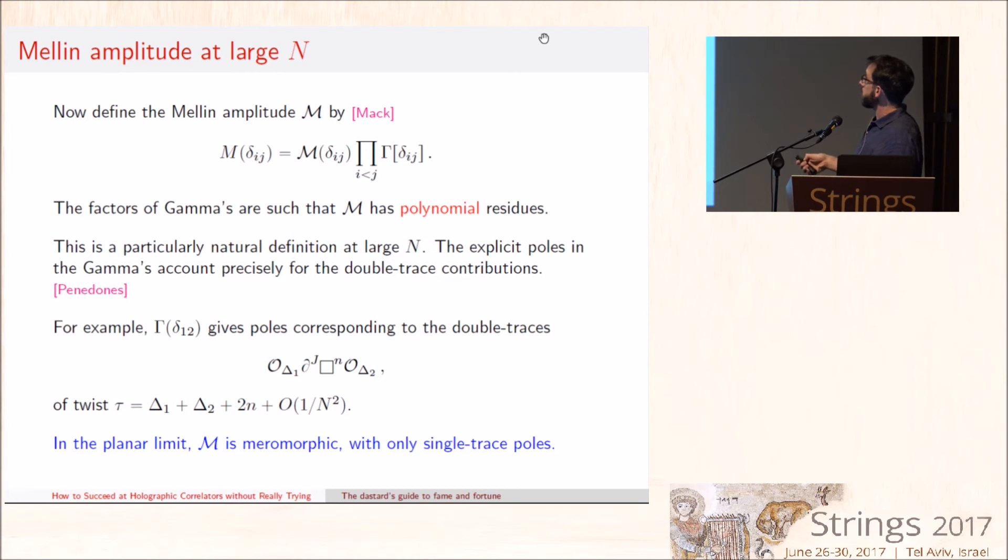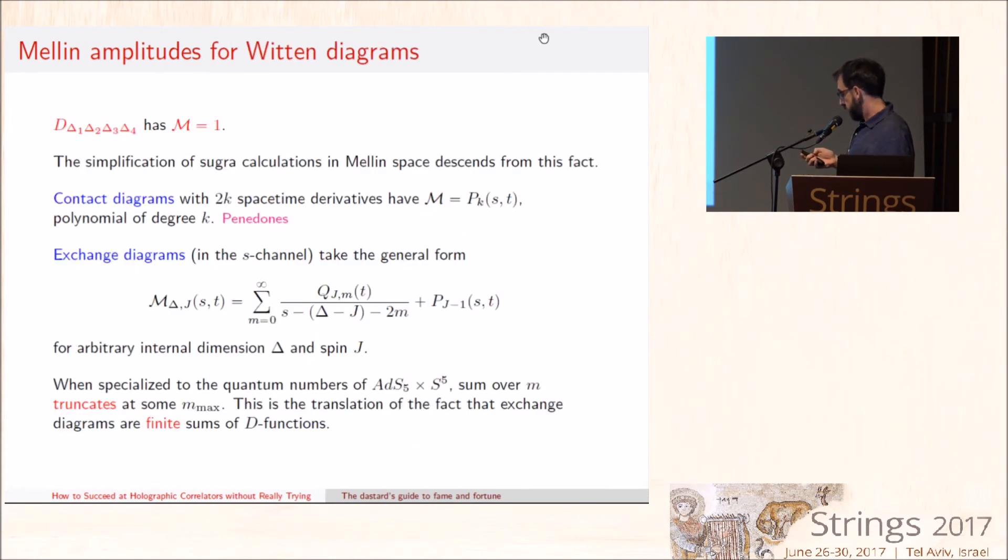For example, as we already saw in the other talk, there is an infinite tower of double trace operators of this kind that have twist equal to δᵢ + δⱼ + 2N plus 1/N² corrections. So to leading order in 1/N², these are precisely capturing the contribution of this infinite tower of operators. And so, lo and behold, in a large-N theory, curly M is truly a meromorphic function with poles only coming from the single traces. In a finite-N theory, the analytic properties of curly M are complicated because of this accumulation and the twist that Fernando told us earlier, and so it's not clear that these tools are so useful for finite N. For large-N, M really has very simple analytic properties.